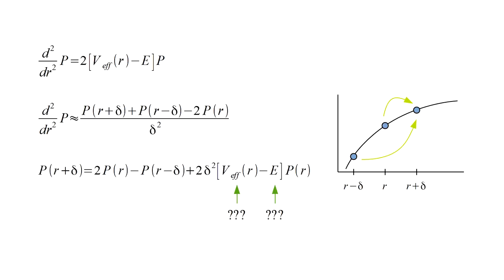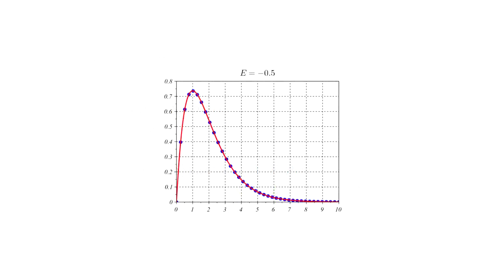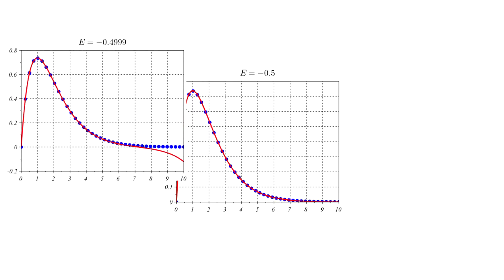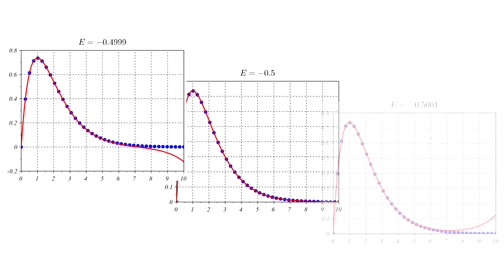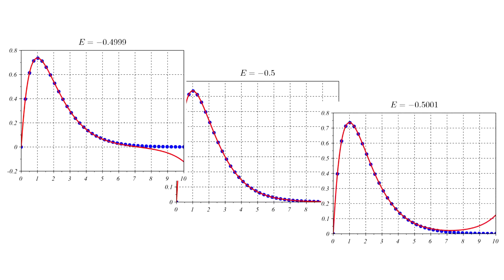To solve the first problem, Hartree took a trial and error approach to calculating energies based on the following fact. If we set up the Hartree equation for the hydrogen atom and put in a correct energy, running our formula produces a correct wave function. But an energy that is a bit too high gives a wave function that eventually diverges to infinity. For an energy that is a bit too low, it diverges to infinity in the opposite direction.